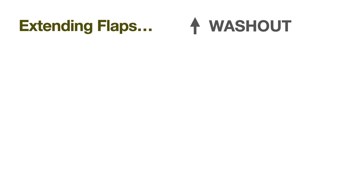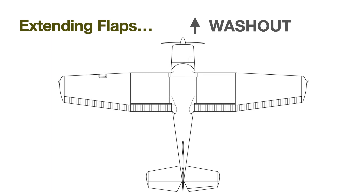Rectangular wings have the best stall characteristics in that they tend to stall at the root first, but they are not the most efficient shape. On a tapered wing, one strategy that manufacturers use to force more favorable stall characteristics is washout — a bit of twist to the wing so that the inboard portion has a higher angle of incidence and that angle becomes lower toward the wingtips. When flaps are extended, the washout increases even more, and that helps warn the pilot of an impending stall while the ailerons still have an effect.